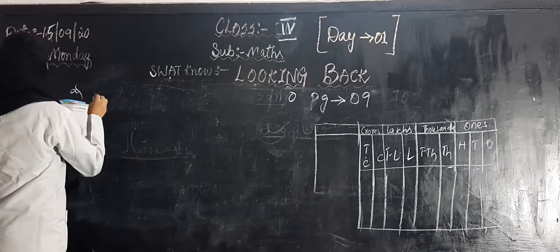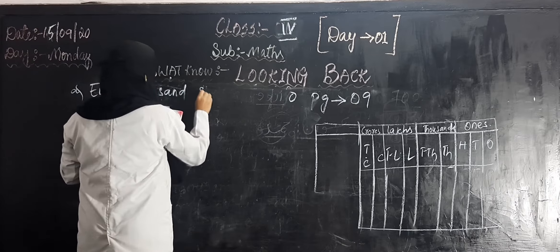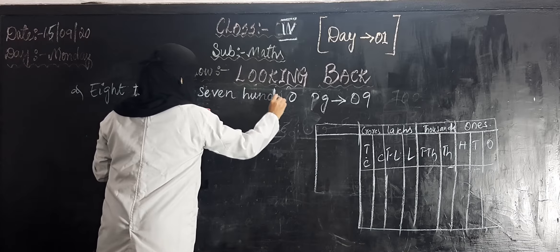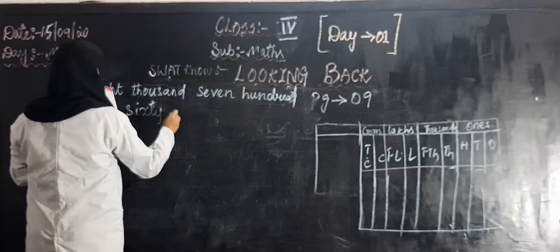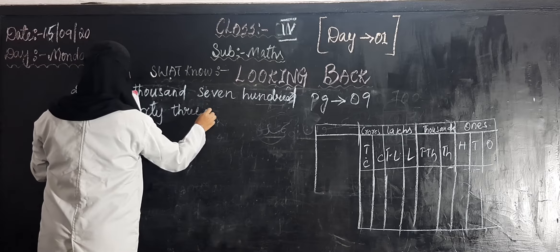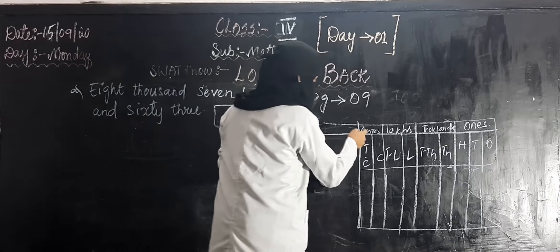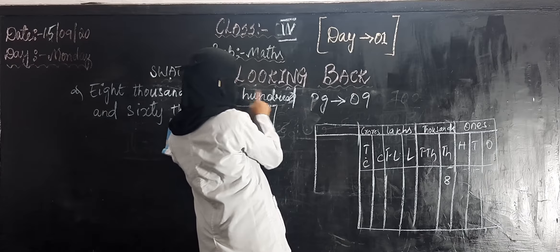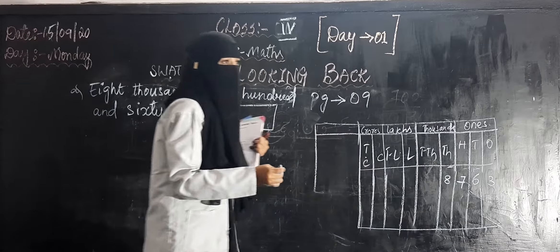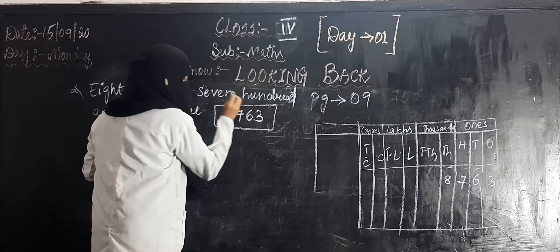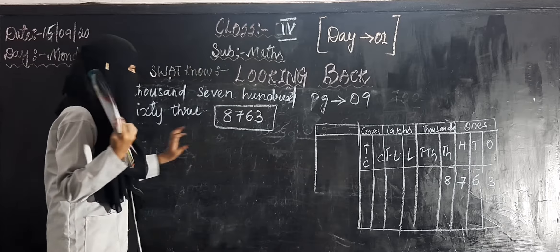So, write the numerals for the following numbers name. First question is eight thousand seven hundred and sixty-three. It's eight only, not eighty. So, eight. Where is thousand? Where is the place of thousand? Here. Eight thousand seven hundred, seven is the place value of hundred, sixty-three. So, the answer is 8,763. Is it simple students?